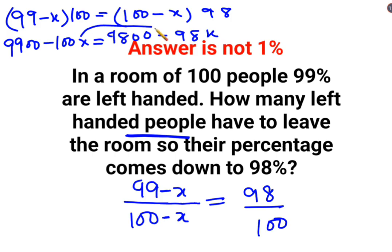Now, shifting all the variables on this side, we have numbers on the other side. So we can say 9900 minus 9800 is equal to 100X minus 98X.